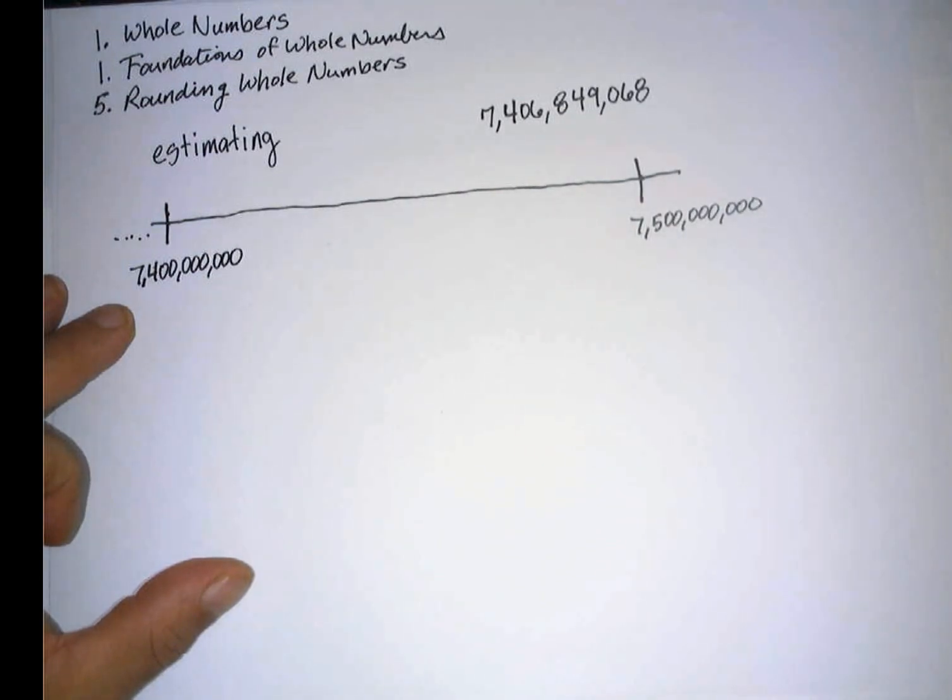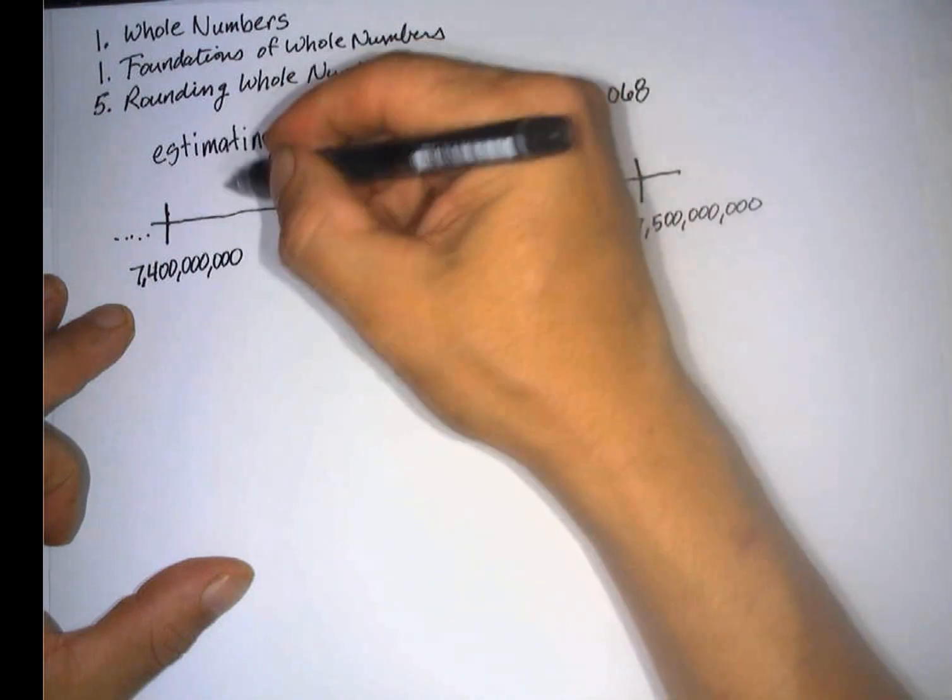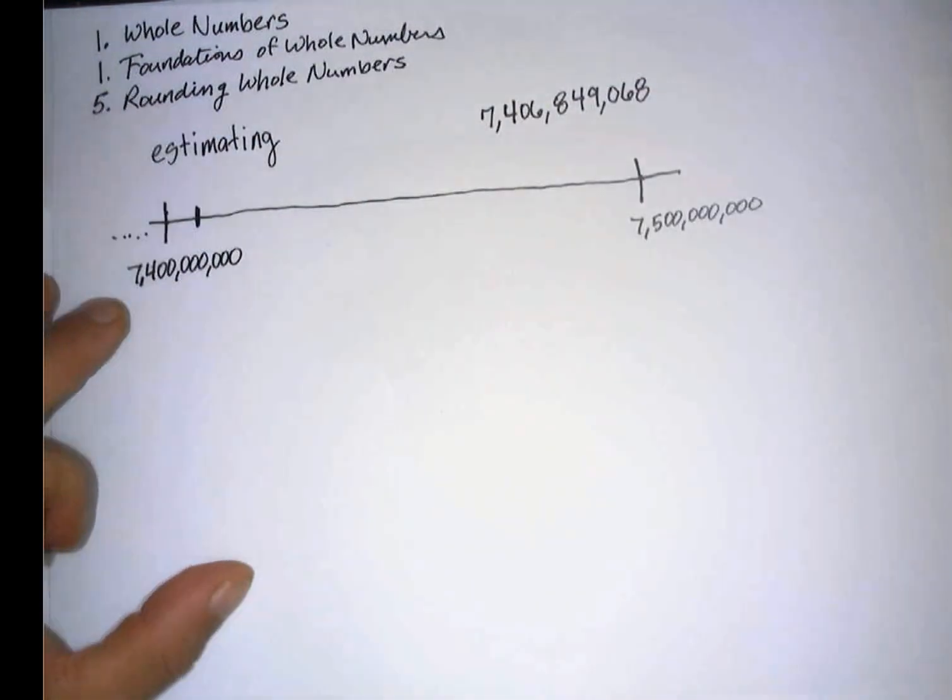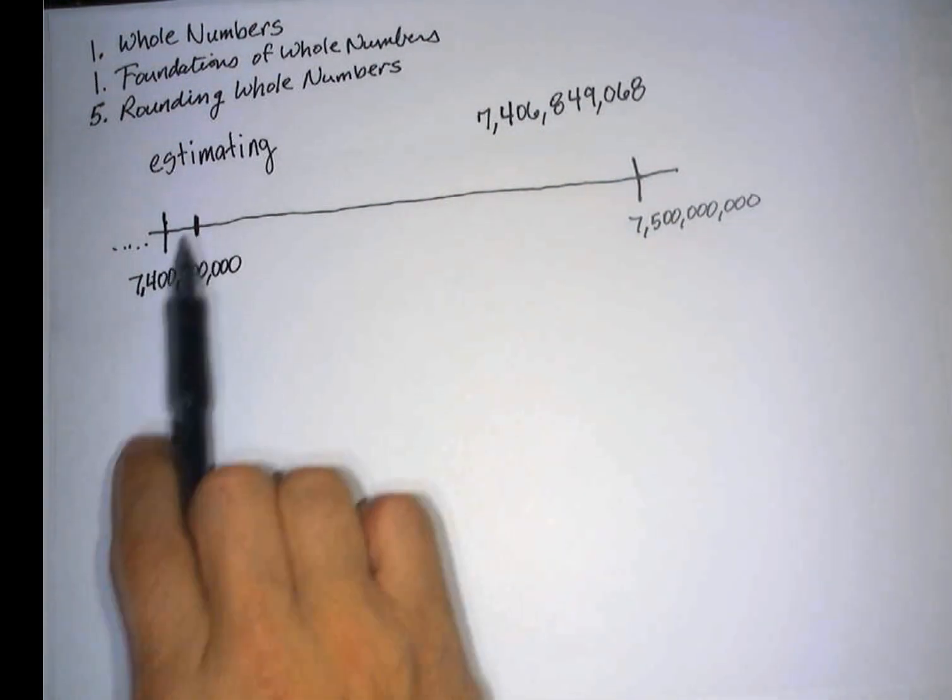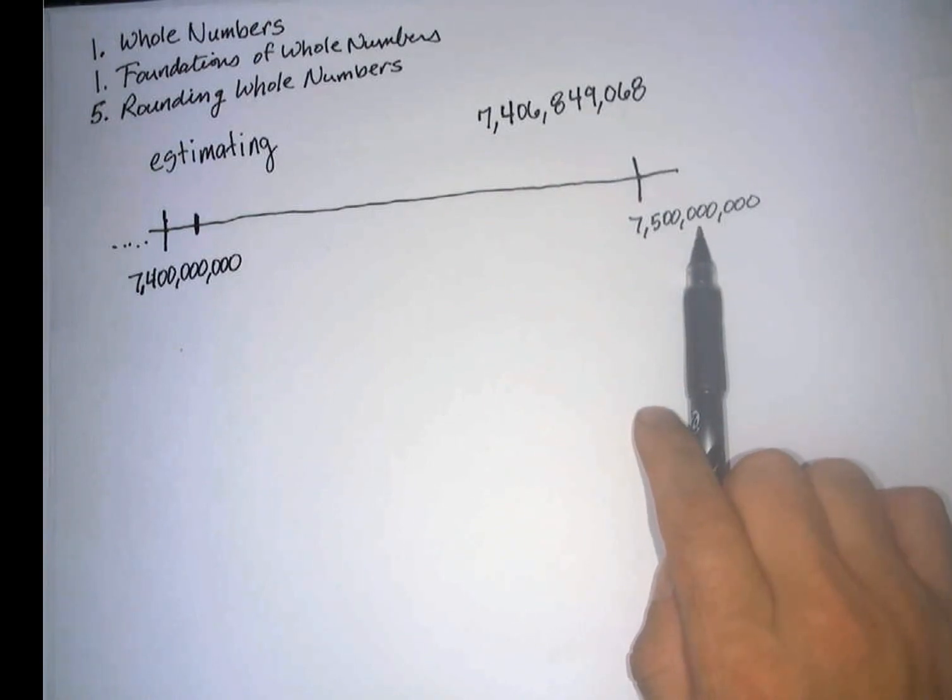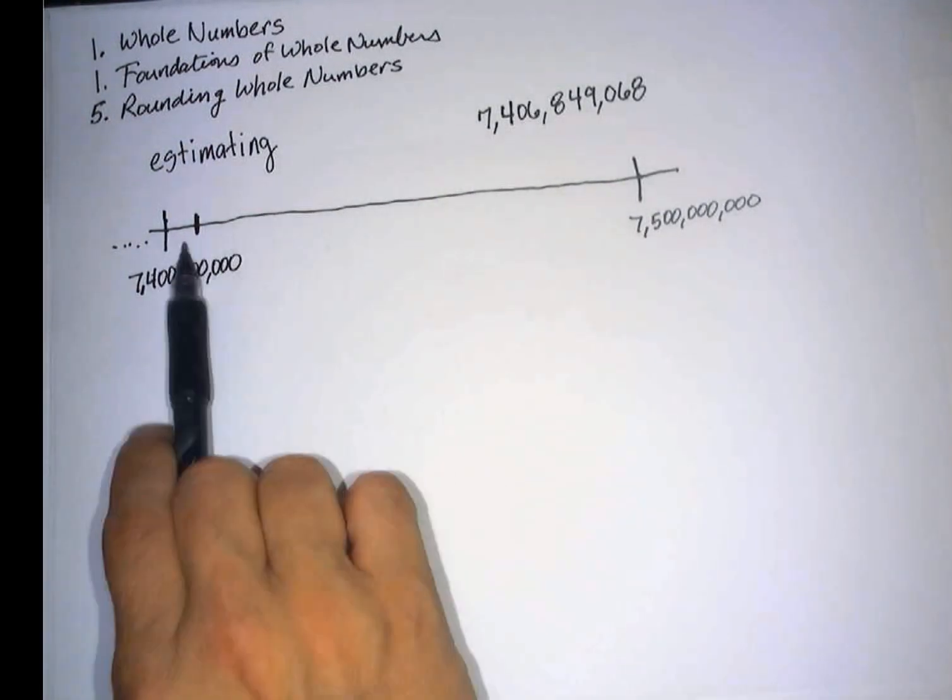Okay, so the number 7,406,000,000 is going to be approximately probably right there. And visually you could see that it is closer to this place value than it is this place value. So we would round this number, and I'm not going to write it again, I'm just going to say that it's right there, to the nearest 7,400,000,000.